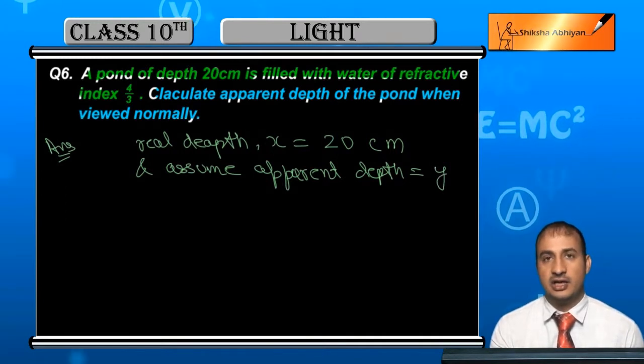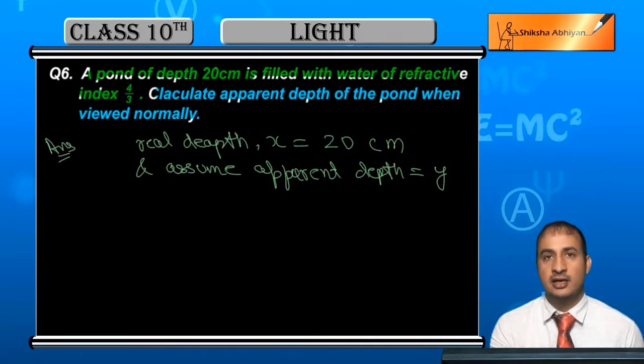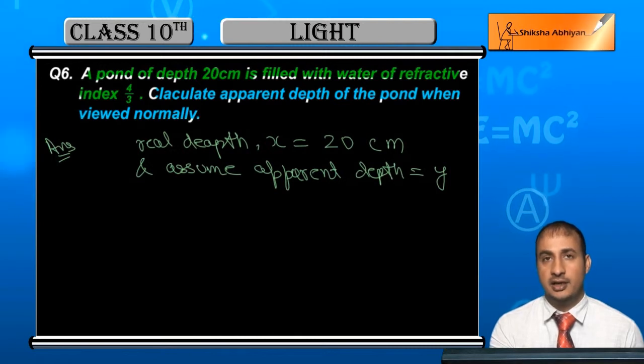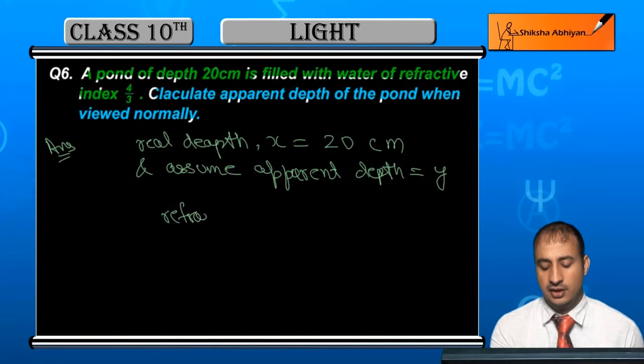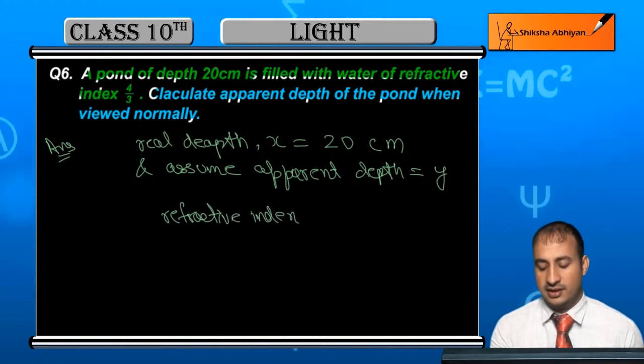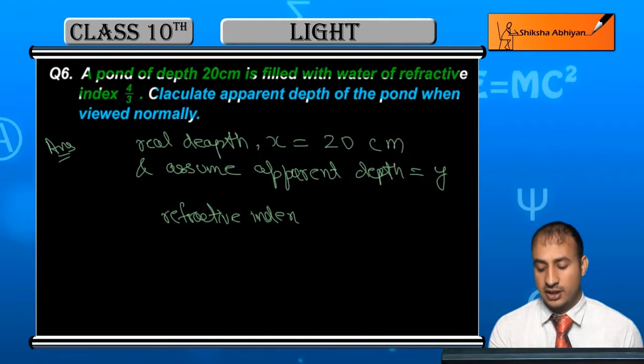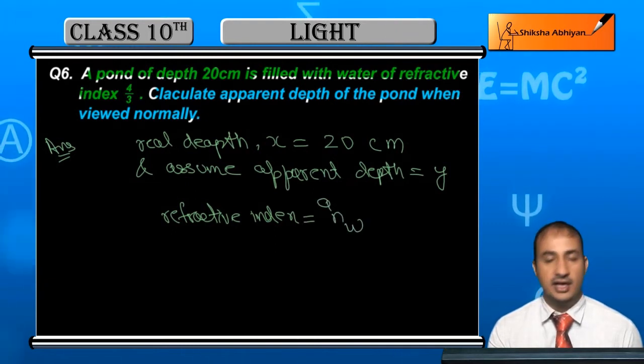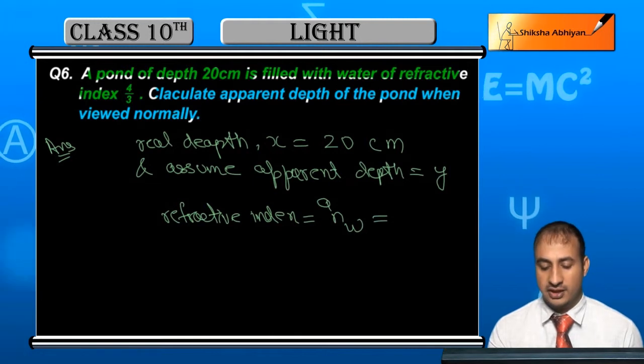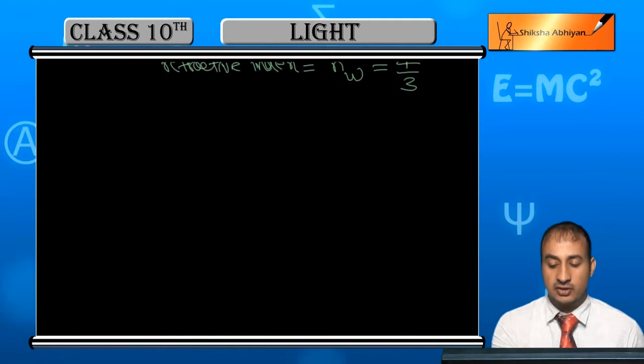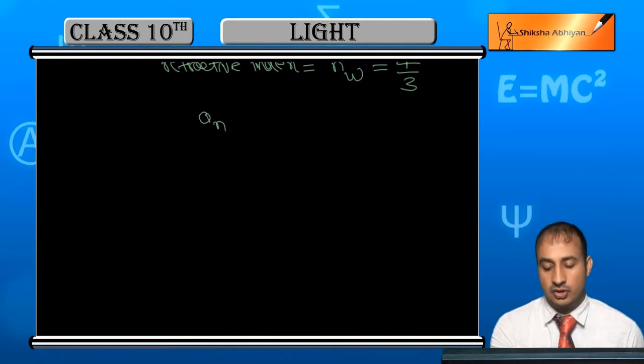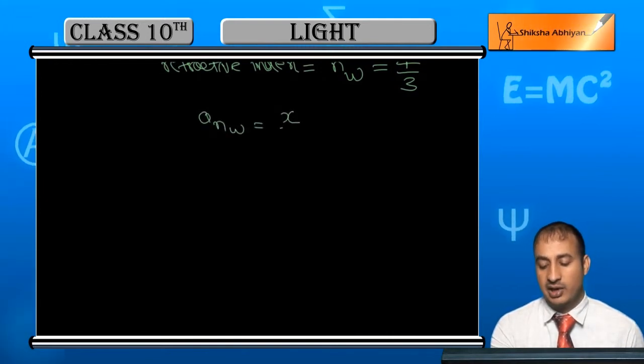Now the refractive index which we have to write for water. The refractive index formula is: refractive index equals real depth divided by apparent depth.